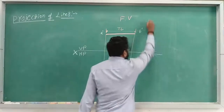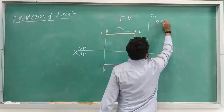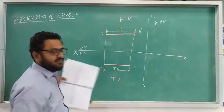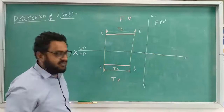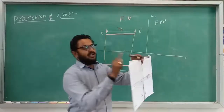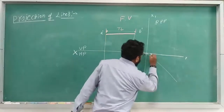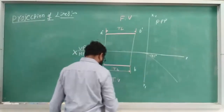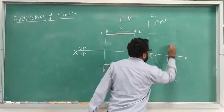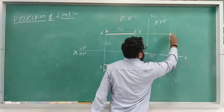For the side view, we draw X1Y1 — this is the Right Profile Plane (RPP). The right profile plane gives the left side view, and the left profile plane gives the right side view. To construct the side view, we draw a common 45-degree angle line, then draw projections from the front view and from the top view up to the 45-degree line, then take a diversion. Where they intersect, we get the side view — which appears just as a dot.